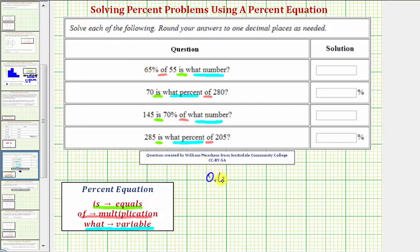So we have 0.65, 'of' means times, then we have 55, so times 55, 'is' means equals, and then we have 'what number', which represents the unknown. Let's use the variable n.